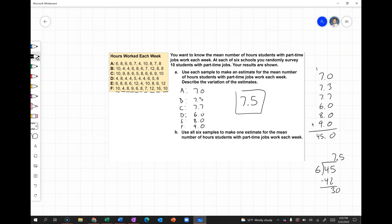So the average, our mean here for hours worked each week for these students with part-time jobs is around 7.5 hours. And then the variation would simply be our range here. The difference from our largest value, 9.0, to our smallest value, 6.0, would be 3. So that is our range, that's the variation of these estimates. And I realize I actually already did this part here. Part B says use all six samples to make one estimate for the mean number of hours students with part-time jobs work each week. That's what we just did getting that answer 7.5.